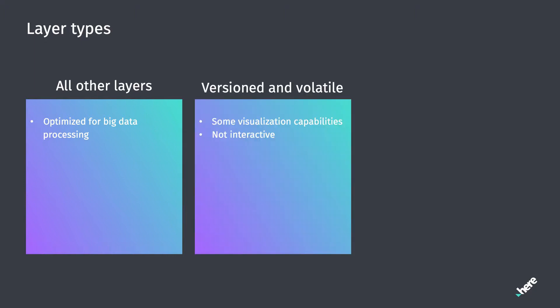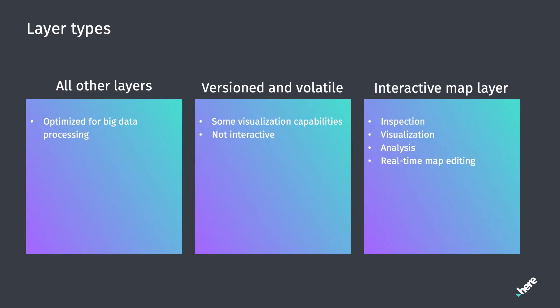Even though the HERE platform does provide map visualization for other layer types, such as versioned and volatile layers, that visualization doesn't offer you the same rich, interactive data inspection and analysis tools, nor does it offer the ability to modify data real-time on a map. These capabilities are what set the interactive map layer apart.